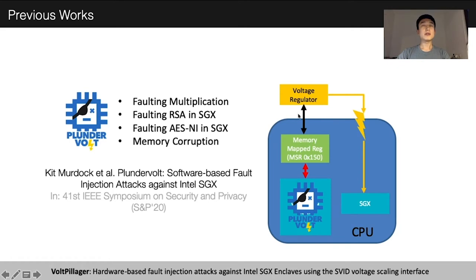We later found that after writing to these registers, the CPU sends commands to an external voltage regulator. They were able to use this voltage fault injection to fault multiplication, RSA, AES-NI, SGX, and also cross-memory protection.